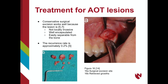Treatment of an AOT is conservative surgical excision. This works well because an AOT lesion is not locally invasive and is well-encapsulated, making the lesion easily separable from bone. In addition, it has a very low recurrence rate of approximately 0.2%. Figure 16A is an example of a surgical excision site of an AOT, and Figure 16B is a picture of the growths retrieved from the excision site.